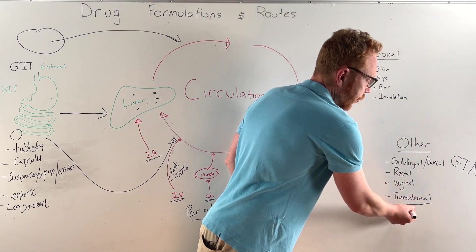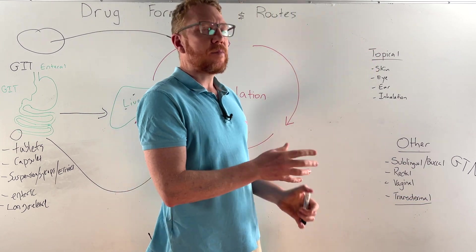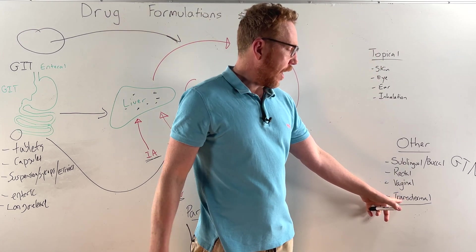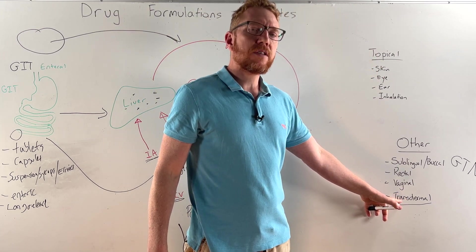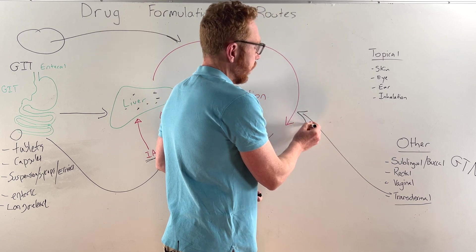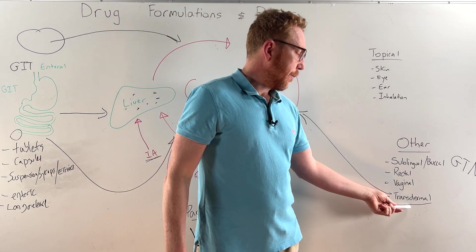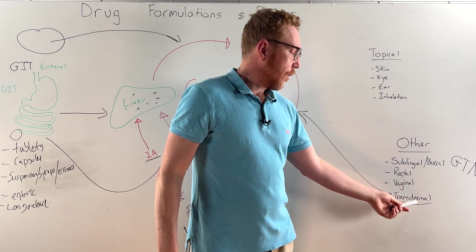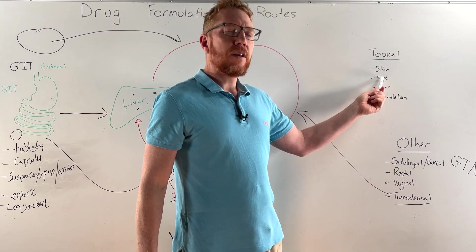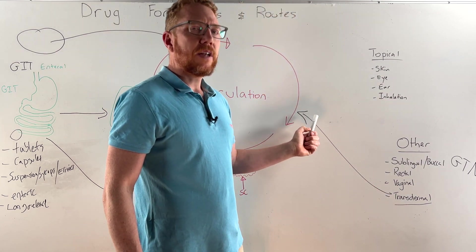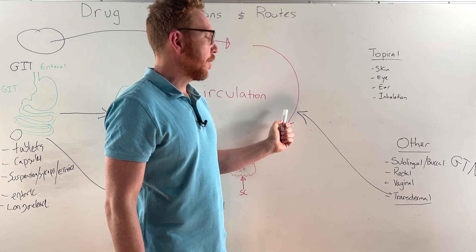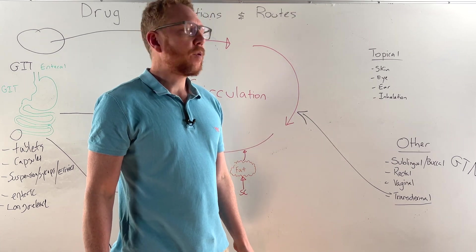Finally we finish off on transdermal. Although this is applied topically, the drug itself can absorb well across the skin into the circulation, so it gains good bioavailability. Examples could be nicotine patches or fentanyl. Although it's applied topically onto the skin, it will be absorbed through the skin into the tissue and blood, so it has more of a systemic effect in the body.